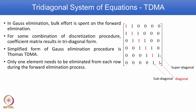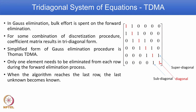In TDMA, only one element needs to be eliminated in the forward elimination process. When the algorithm reaches the last row, you have an equation with only one unknown on the left side and a known value on the right side, so you are immediately able to get the unknown. Then we follow backward substitution to get all the remaining unknowns.